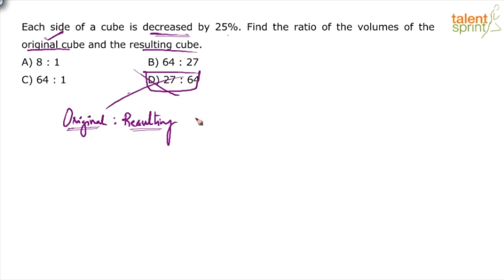Now how do we do this? Volume of a cube is side cubed, S³. Let us assume the original side S is equal to 4. So what will be the new side S'?